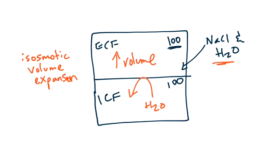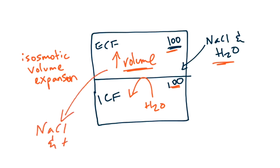The osmolarity of the compartments has stayed the same, but the volume of the extracellular fluid compartment has gone up. The exact opposite would occur in a patient who is losing equal concentrations of sodium chloride and water — for example, someone with diarrhea. This is called isoosmotic volume contraction.